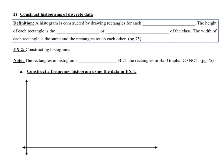Objective two: construct histograms of discrete data. By definition, a histogram is constructed by drawing rectangles for each class of data. The height of each rectangle is the frequency or relative frequency of the class. The width is the same for all rectangles, and importantly, the rectangles touch each other — which is different from bar graphs, where the rectangles do not touch.